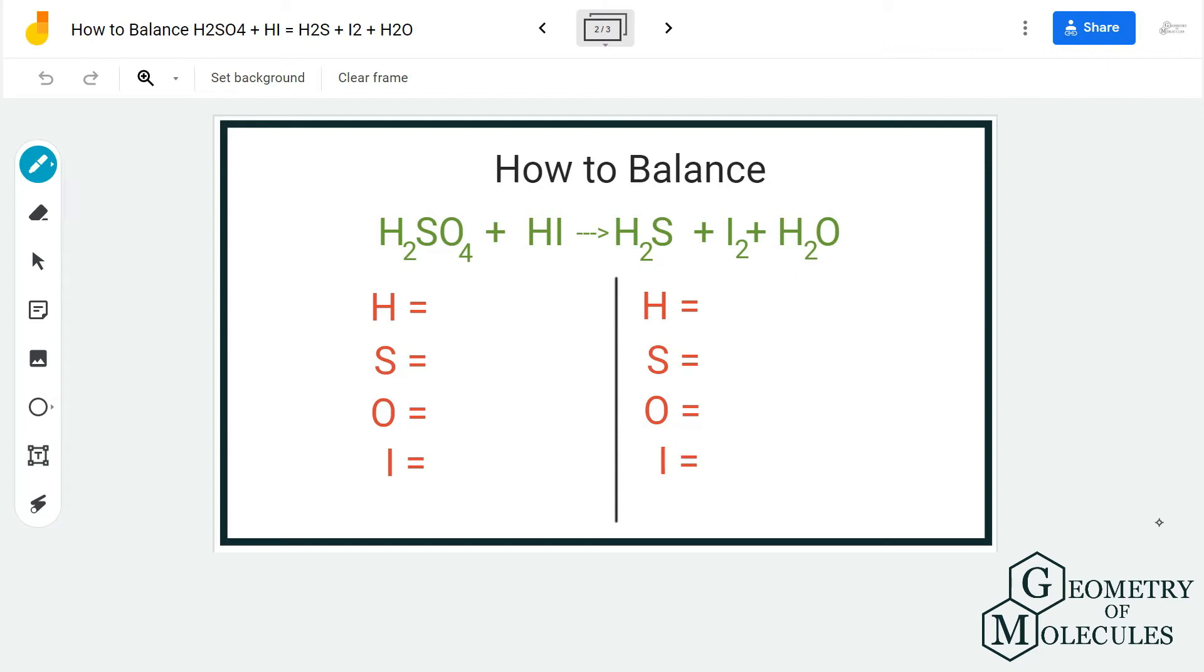For the reactant side we have 2 plus 1, that is 3 hydrogen atoms. For sulfur we have only 1 sulfur atom, for oxygen we have 1 oxygen atom, and for iodine we have only 1 iodine atom.